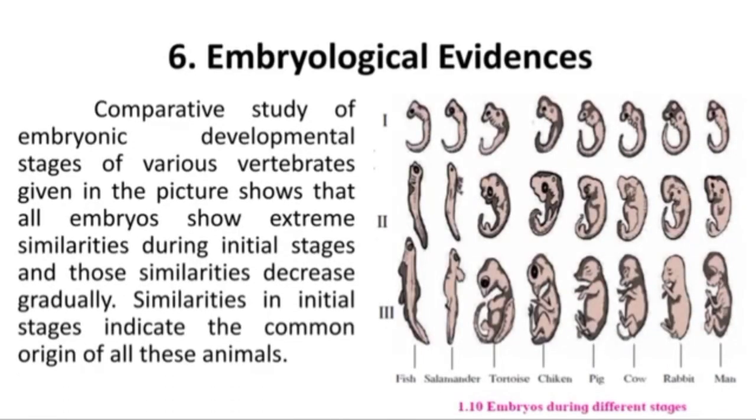Embryological Evidences. A comparative study of the embryonic developmental stages of various vertebrates shows that all embryos show extreme similarities during initial stages, and those similarities decrease gradually. Observing Figure 1.10, we see that in the first stage all organisms look absolutely similar, and gradually changes are seen. This similarity in the initial stages indicates that these animals have a common origin.